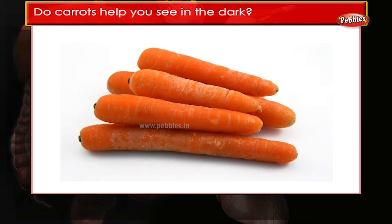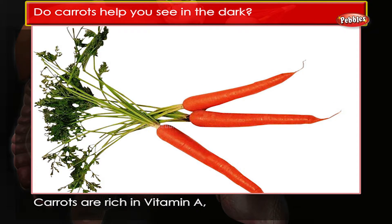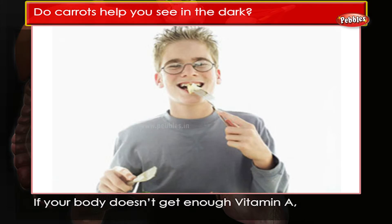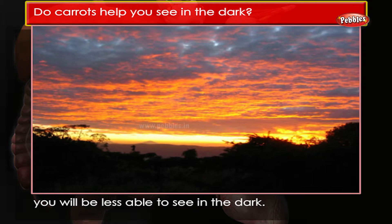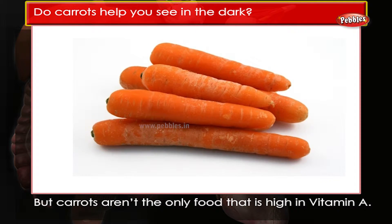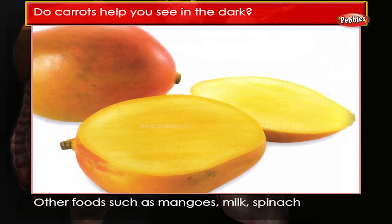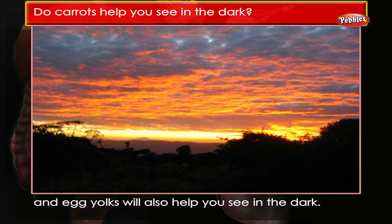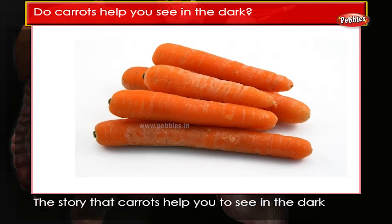Do carrots help you see in the dark? Carrots are rich in vitamin A, which is necessary for seeing in dim light. If your body doesn't get enough vitamin A, you will be less able to see in the dark. But carrots aren't the only food high in vitamin A — other foods such as mangoes, milk, spinach, and egg yolks will also help you see in the dark.